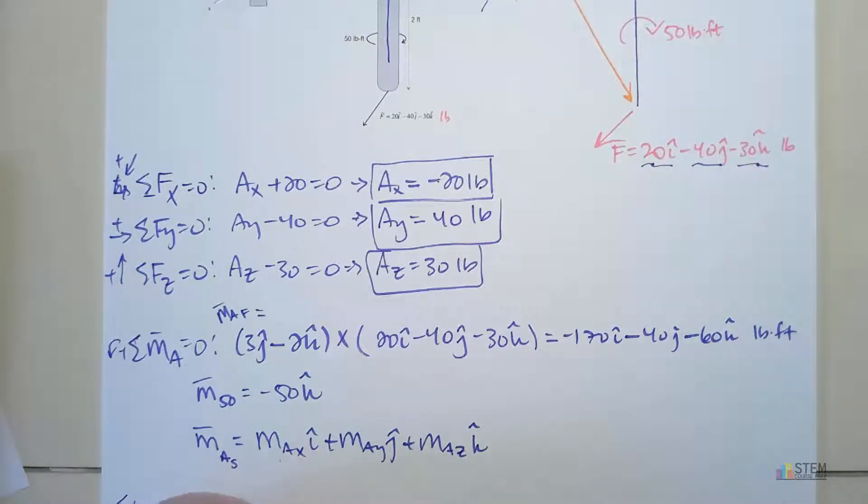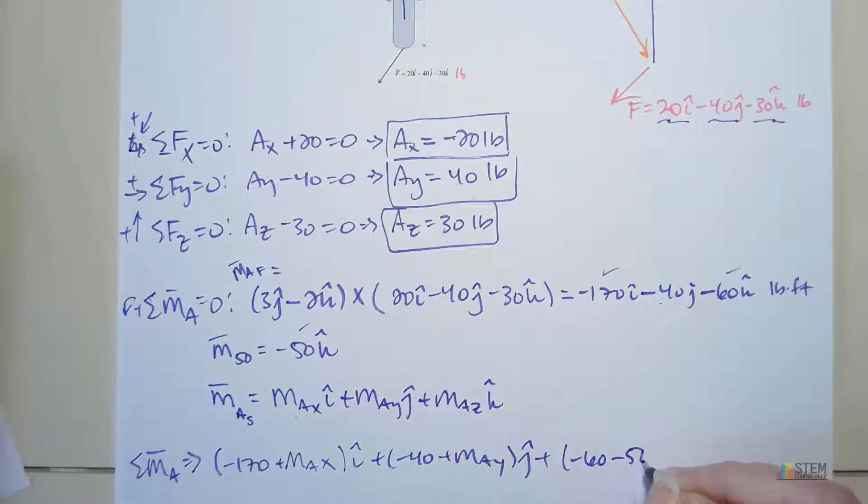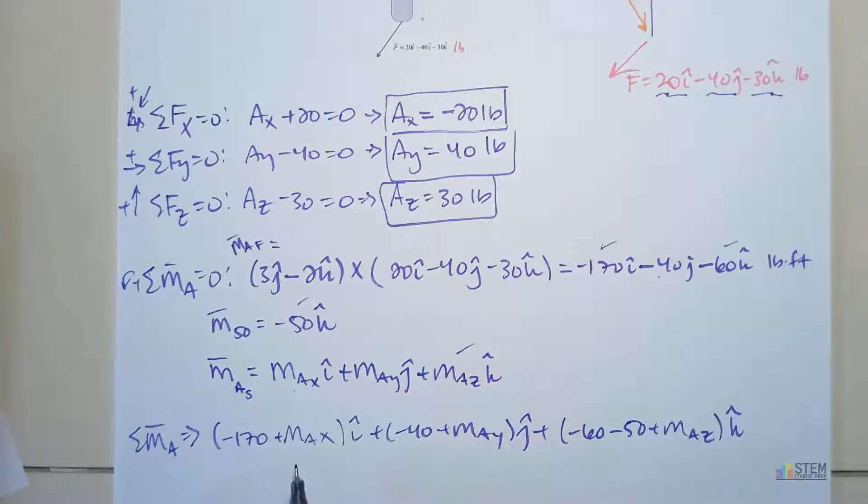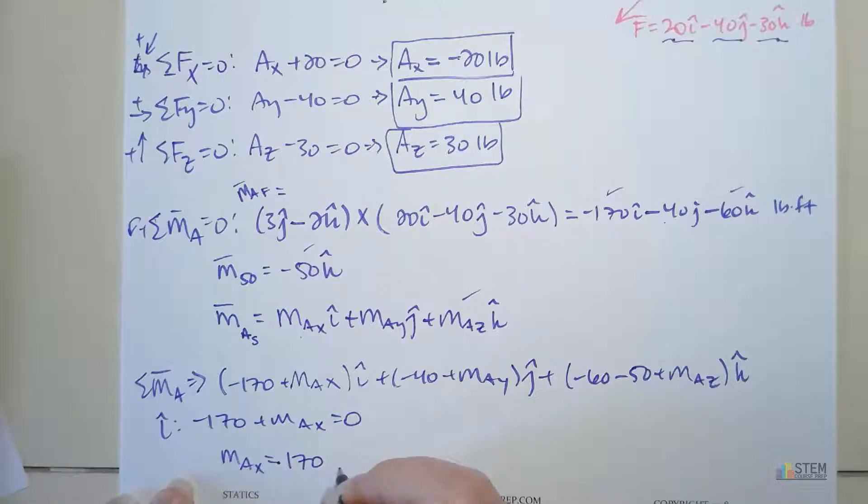Now we've got our three moment equations. Let's sum the components up. If we do that, we get negative 170. There's our 170, that's from here, and then the other I component is going to be plus M-A-X. Those are both I's. Now let's go to the J components. We've got negative 40, so we'll have plus negative 40, and then the other J component is M-A-Y. We're assuming positive, so we put J. K components, 60, the negative 50, and M-A-Z. Now we've got that. Now how many equations do we get here? We get three, right, one for this, this, and then this. So let's break it down into the components. Negative 170 plus M-A-X equals zero. We can solve this one now. We can find M-A-X. So M-A-X is going to be 170 foot-pounds.